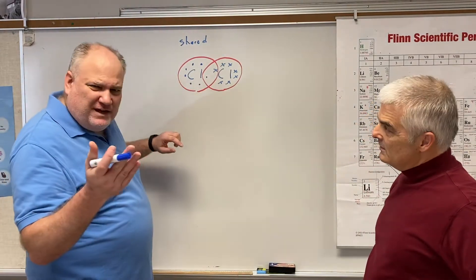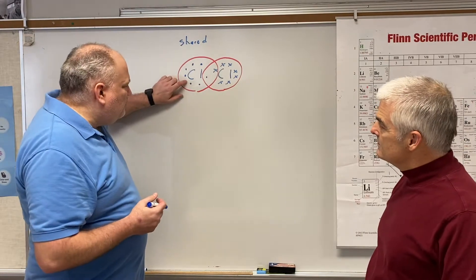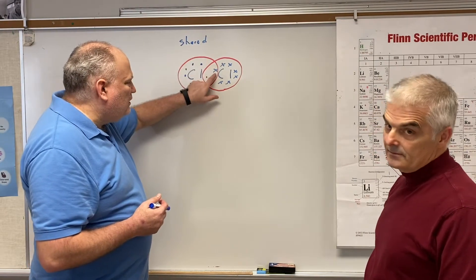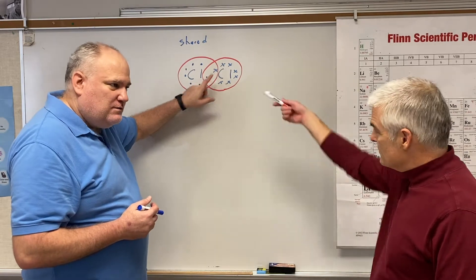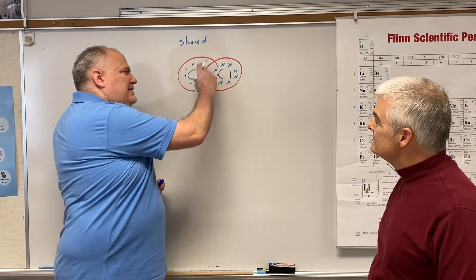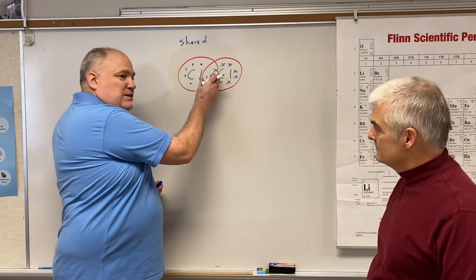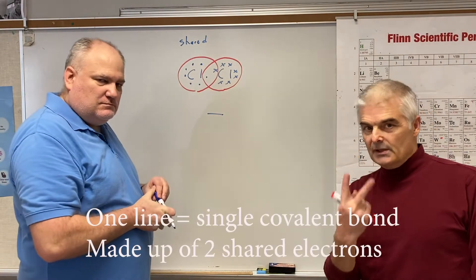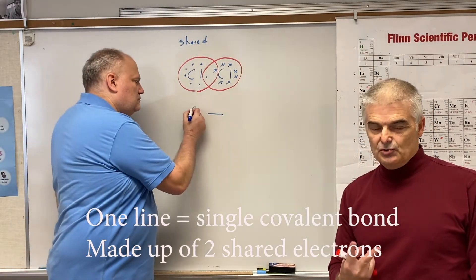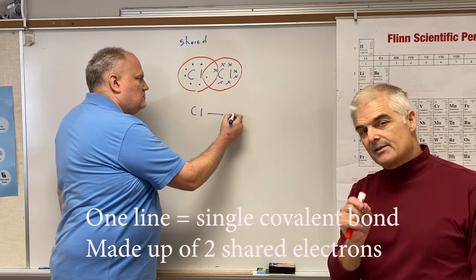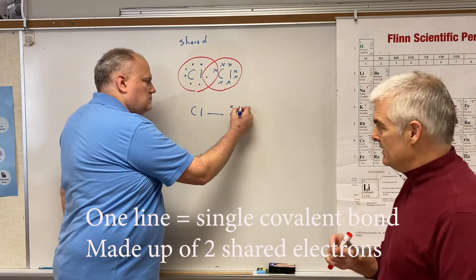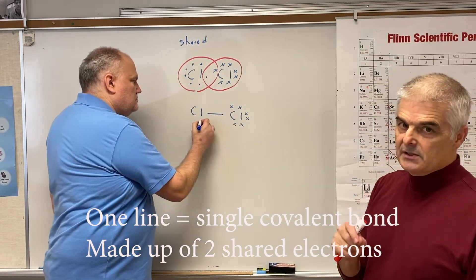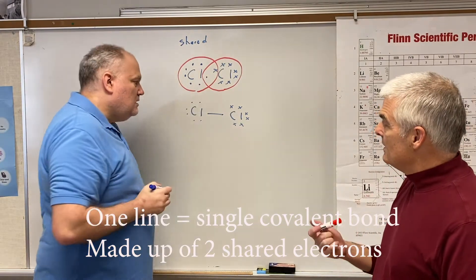It's kind of like a Venn diagram. This chlorine not only claims the seven that it has, but also claims the shared one as its own — and vice versa for the other. The way we represent this overlap is by drawing a line. A line represents two electrons shared between two atoms — that's what we call a single bond: two electrons shared between two atoms in a covalent bond.